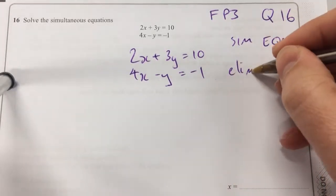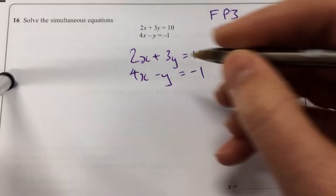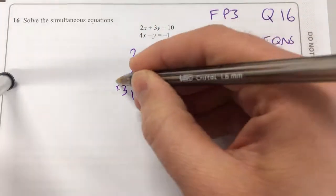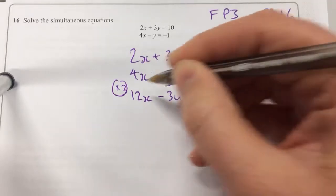Okay, so we want to use the process of elimination, as you say, make one of the variables the same. So if I times this one by 3, we'll have 12x minus 3y equal to minus 3.